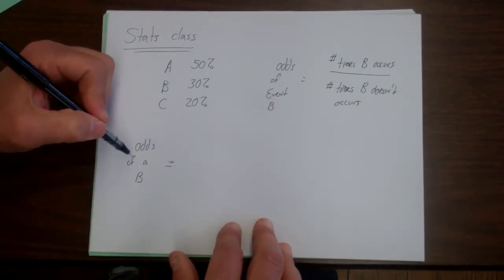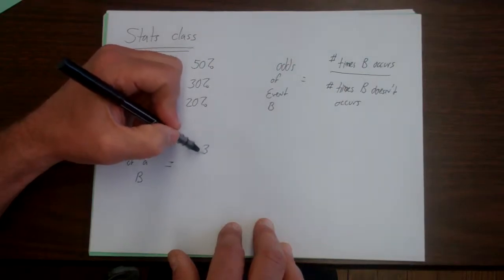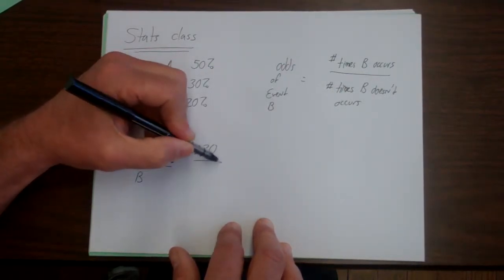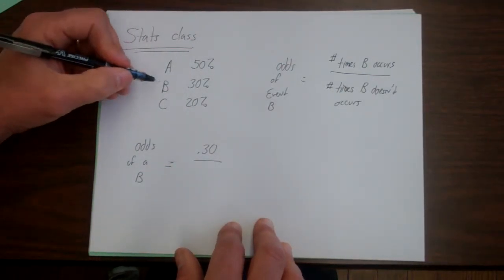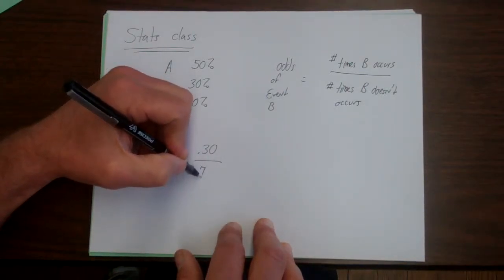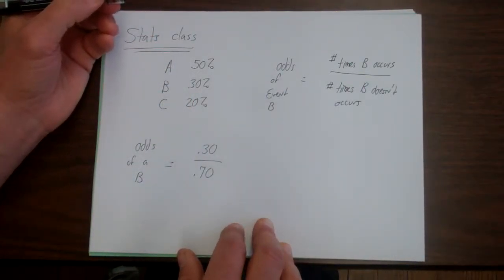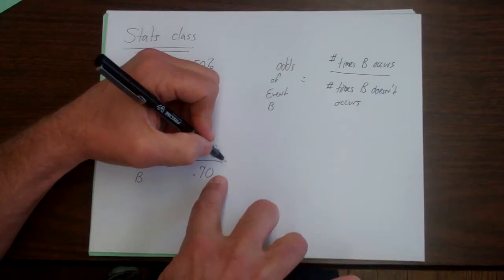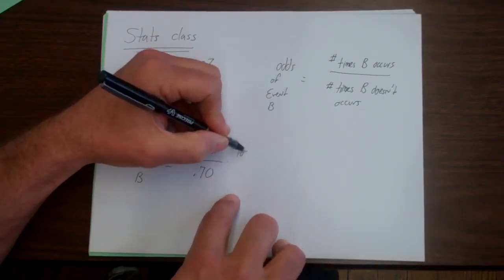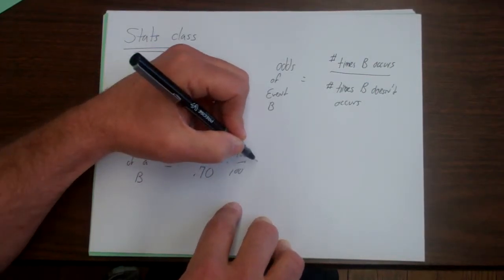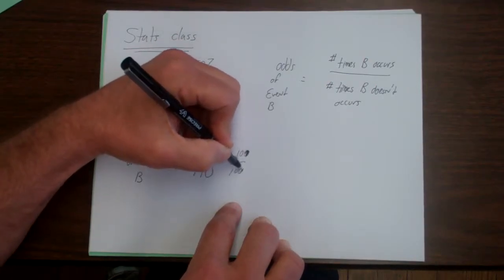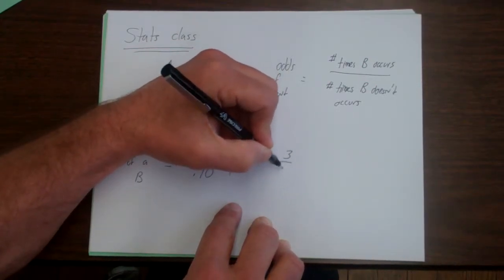So the odds of B happening, let's see when B happens. B happens 30% of the time, so that's 0.30. And B doesn't happen 70% of the time. I'm going to simplify that by multiplying both the top and the bottom by 100, or actually just by 10. And I get the odds are 3/7ths.